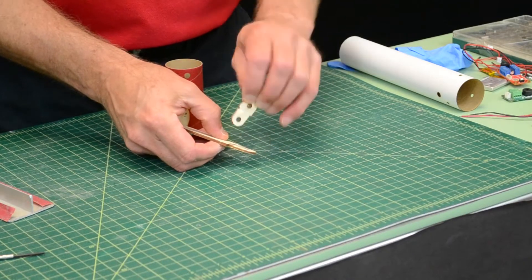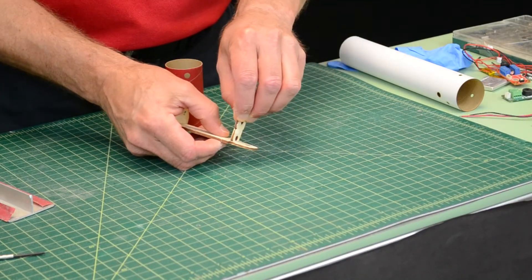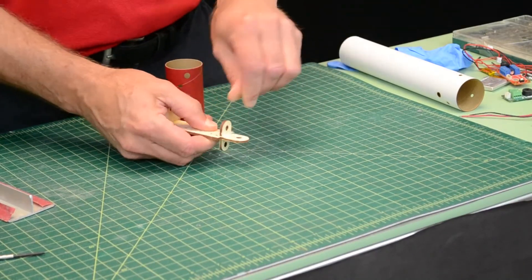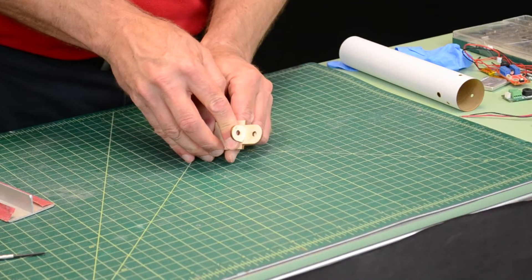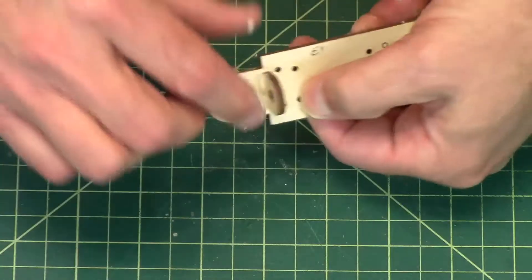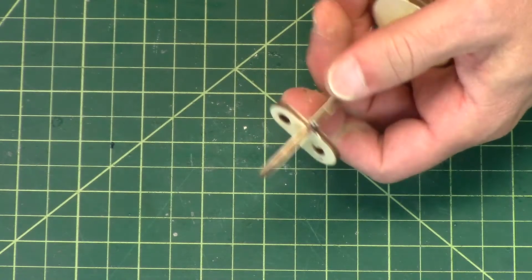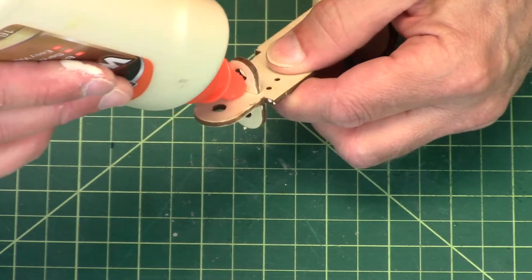So that's going to be glued there and it doesn't matter which way it goes. It just needs to go down in there. Push it in. And you can fill up the sides like we did before. It just makes a stronger piece.